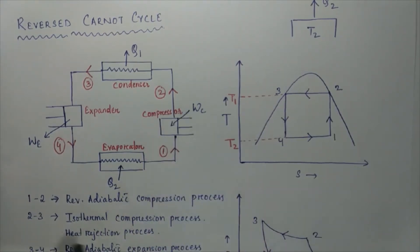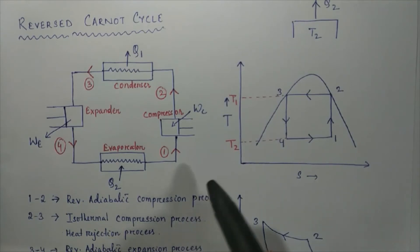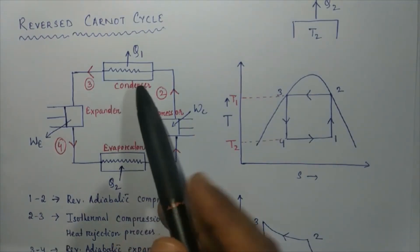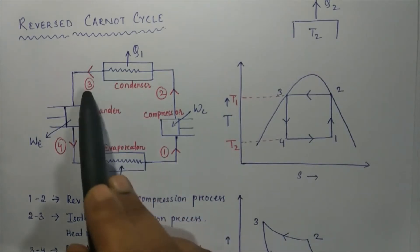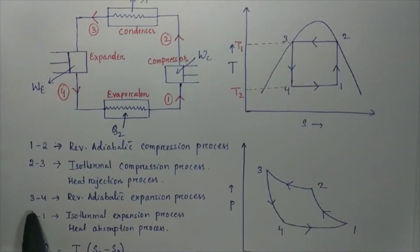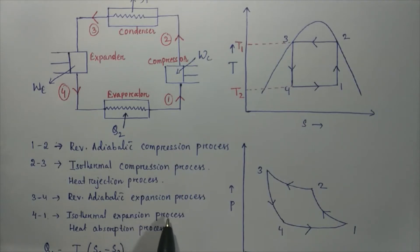The basic components of a Carnot refrigerator are the evaporator, compressor, condenser, and expander. The compressor undergoes a reversible adiabatic compression process (process 1 to 2). The condenser is a heat rejection process at constant temperature (process 2 to 3). The expander undergoes reversible adiabatic expansion (process 3 to 4). The evaporator is a heat absorption process at constant temperature, also called an isothermal expansion process (process 4 to 1).